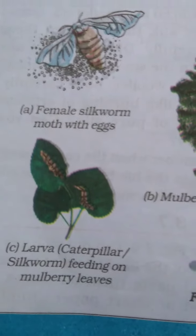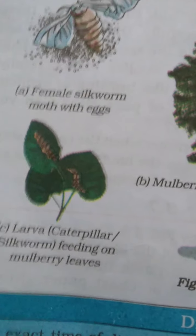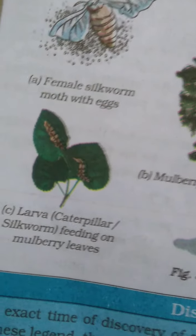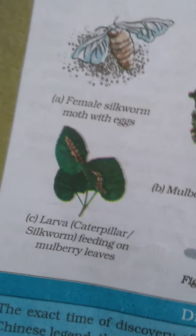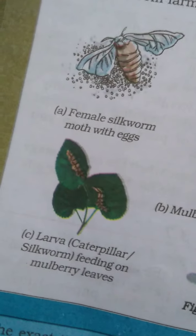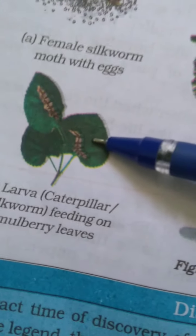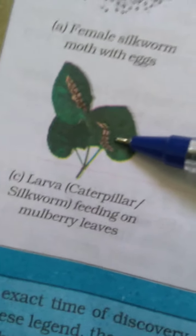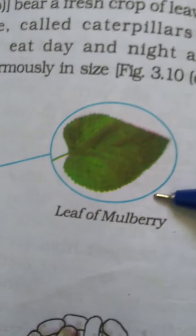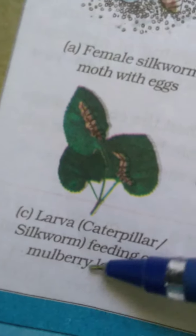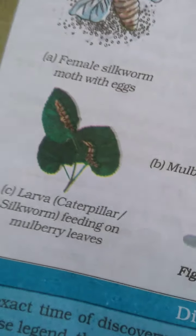These eggs are stored and given to the farmers. The farmers keep them in suitable and hygienic conditions. The eggs are warmed to a suitable condition. It is mulberry leaf — you can see this is a mulberry leaf. The hatching of eggs can be done on mulberry leaves. So it is the larva, also known as caterpillar, of the silkworm feeding on the mulberry leaf.